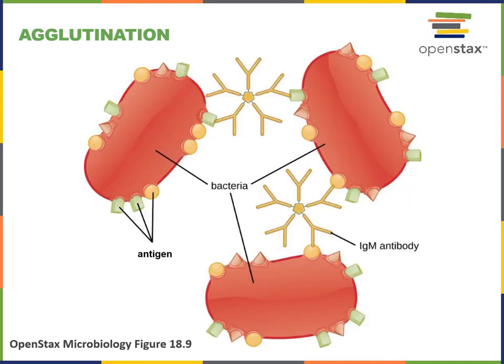Agglutination refers to the clumping of antigens by antibodies. Here we see the IgM antibody has multiple antigen binding sites, making it especially efficient at agglutination. Most antibodies have just two antigen binding sites, but the IgM pentamer has 10 antigen binding sites, making it very efficient at agglutination. Bacterial cells are clumping together in the mechanism of agglutination, and this clumping helps prevent the spread of infection, as well as making it easier for other mechanisms of the immune system to target and remove the bacterium from the body.